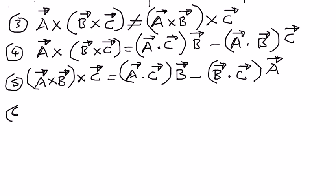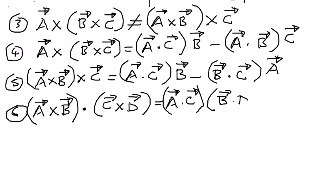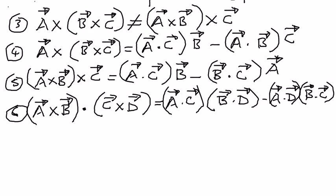The next property is: if we have vector A cross vector B, and then take the dot product of that with vector C cross vector D, that is the same as saying vector A dot vector C times vector B dot vector D, minus vector A dot vector D times vector B dot vector C. All of these properties are true, and we will take each one and explain them with a simple example.